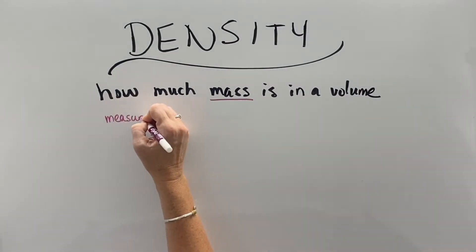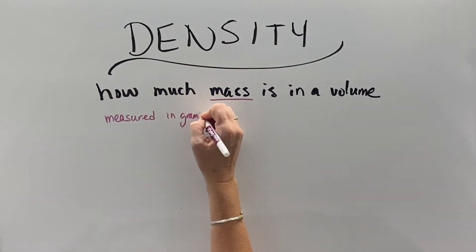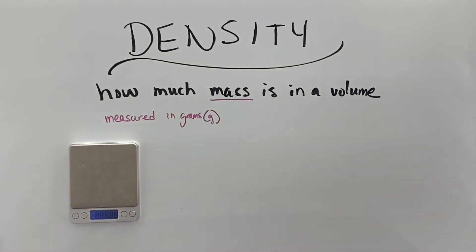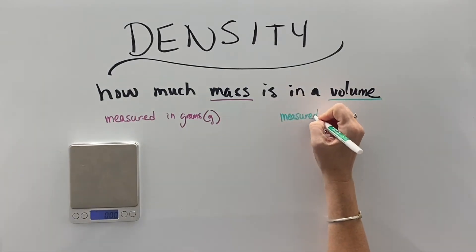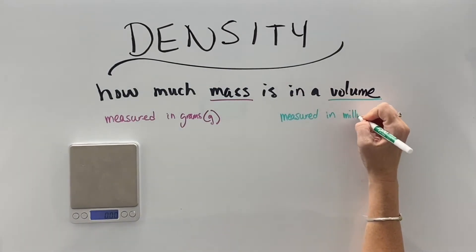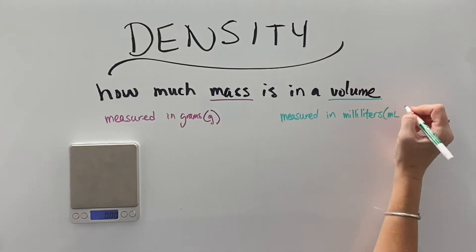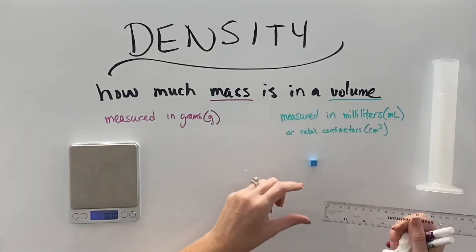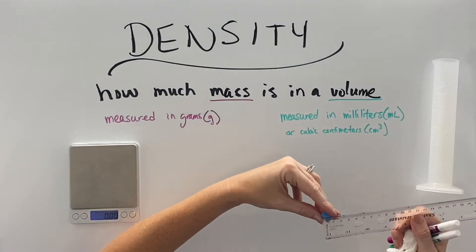Density is the amount of mass in a volume. Mass is measured in grams, which we denote with a little g. Usually measured on a scale, ancient would have been more like a balance, and volume is measured in milliliters, which we denote with a lowercase m and a capital L. We typically measure this in a graduated cylinder, and on a 100-meter graduated cylinder like I have here, all little lines mean one milliliter.